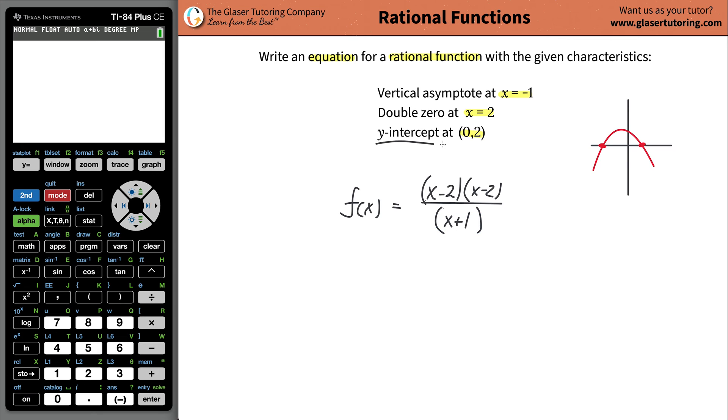The next part is the y-intercept. The thing about the y-intercept is we know the values of x—x has to be equal to zero, and the y value is going to be two. What you're going to do is take the two and plug it in for your function value, and then take your zero and plug it in everywhere you have an x. So it's going to be zero minus two, zero minus two, all over zero plus one.